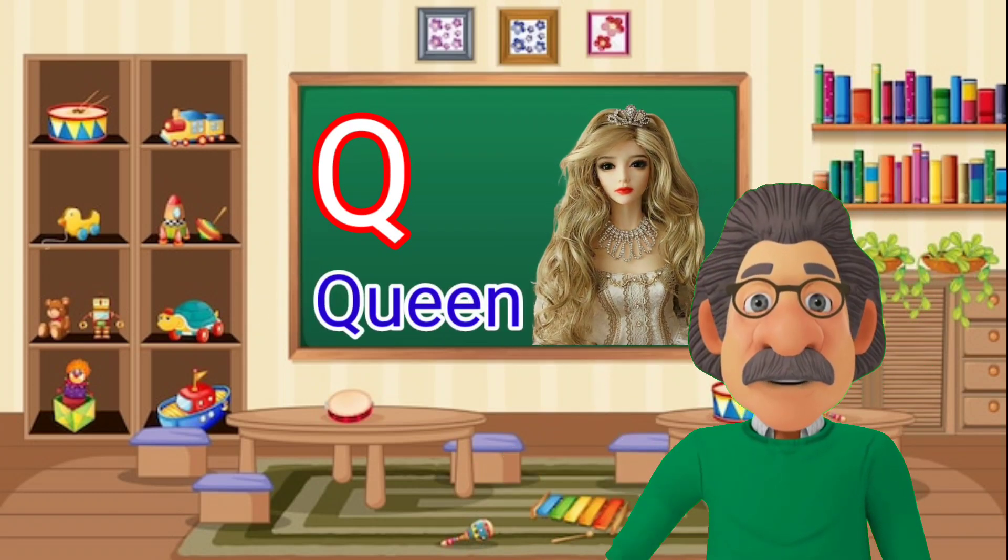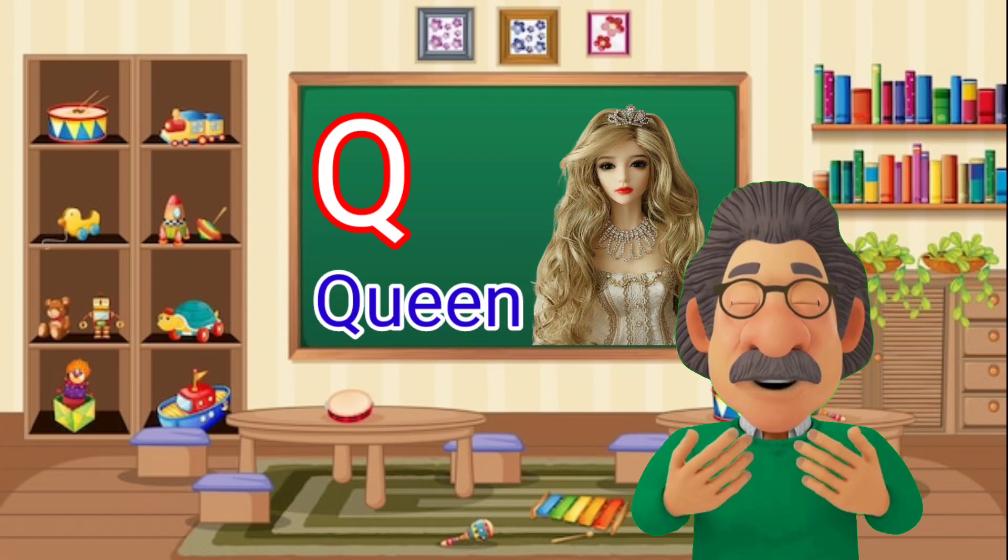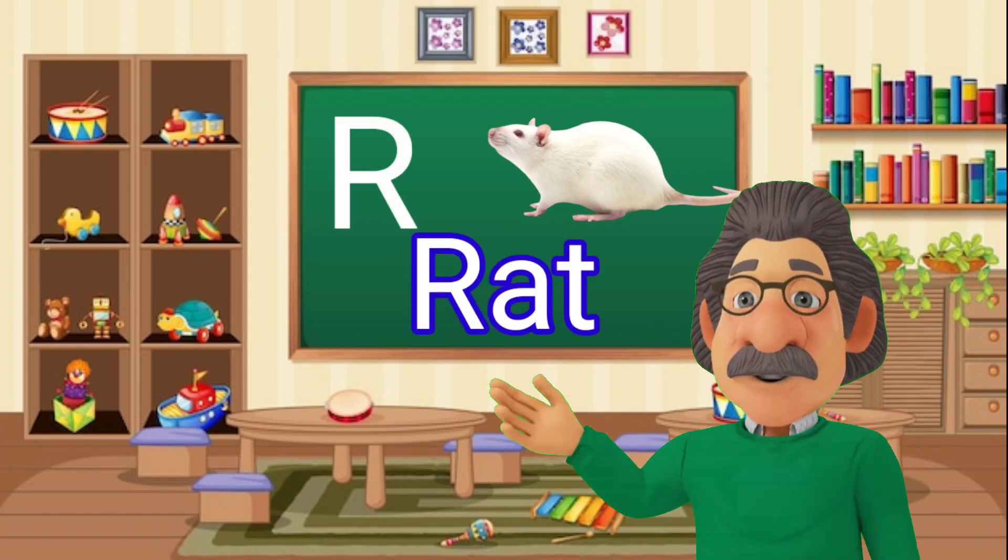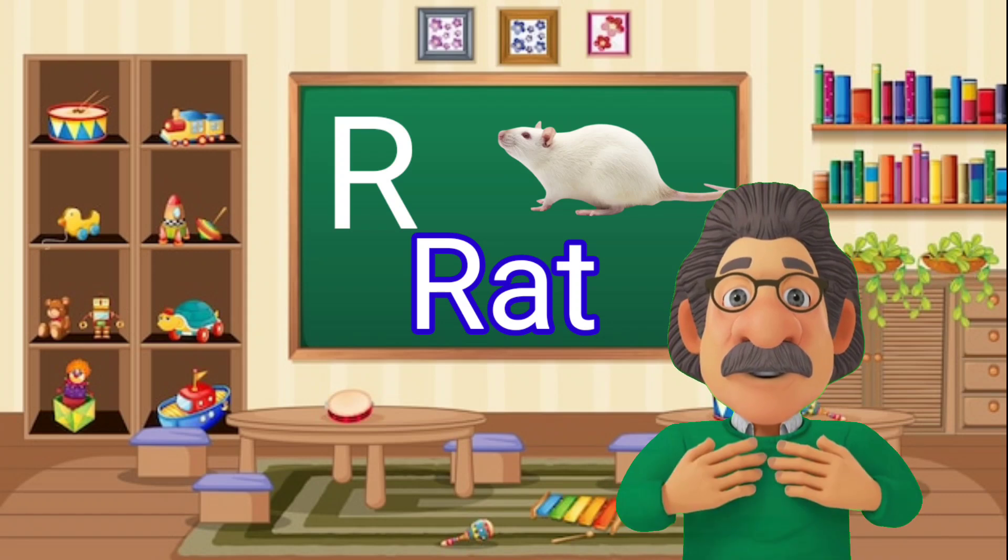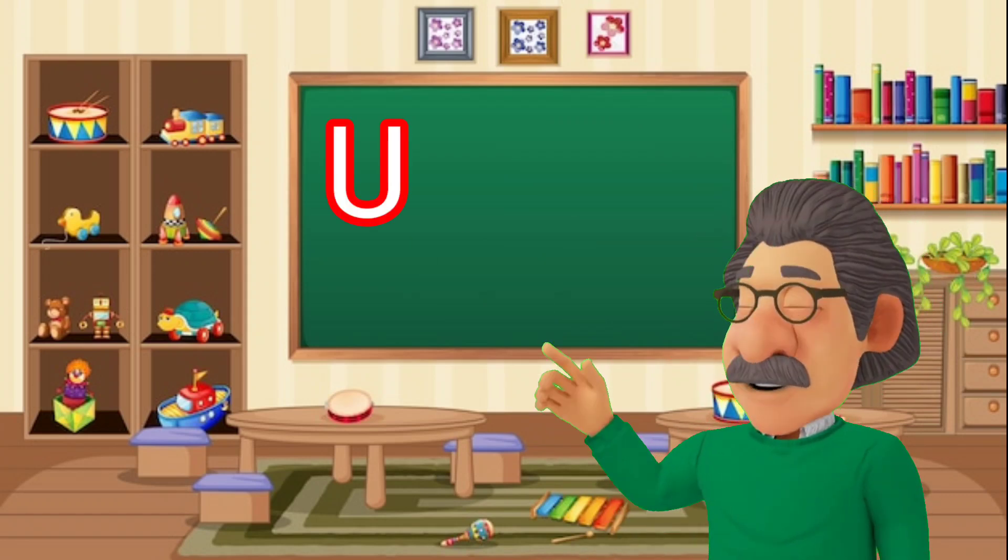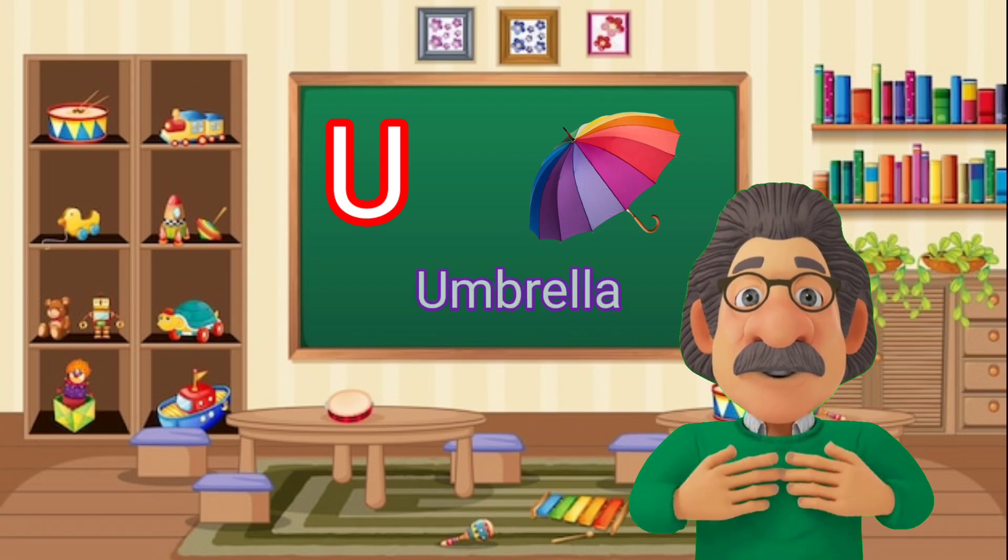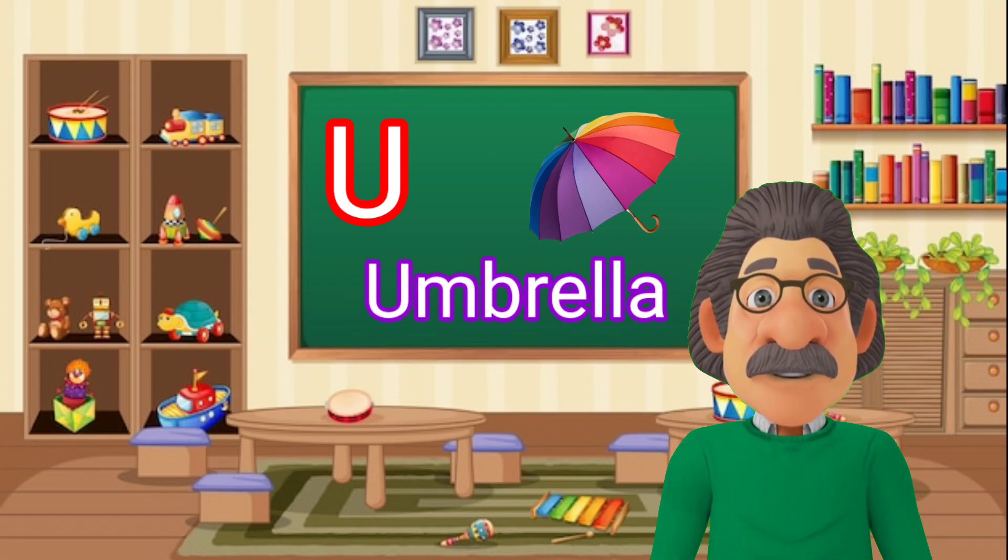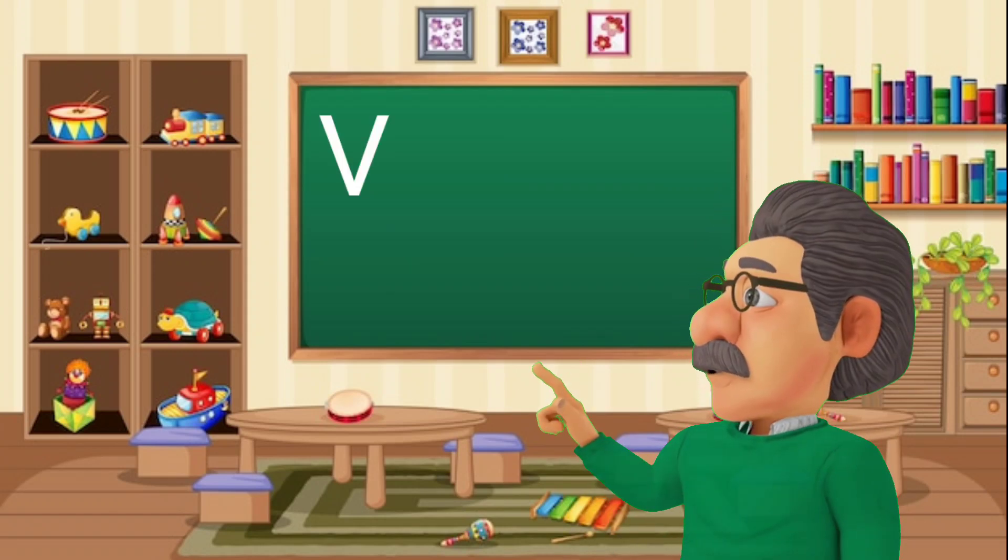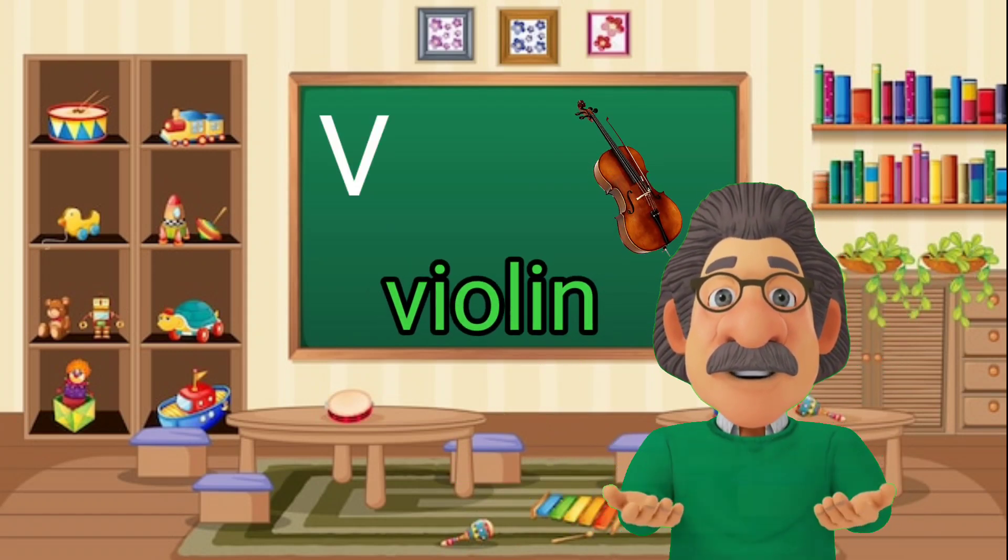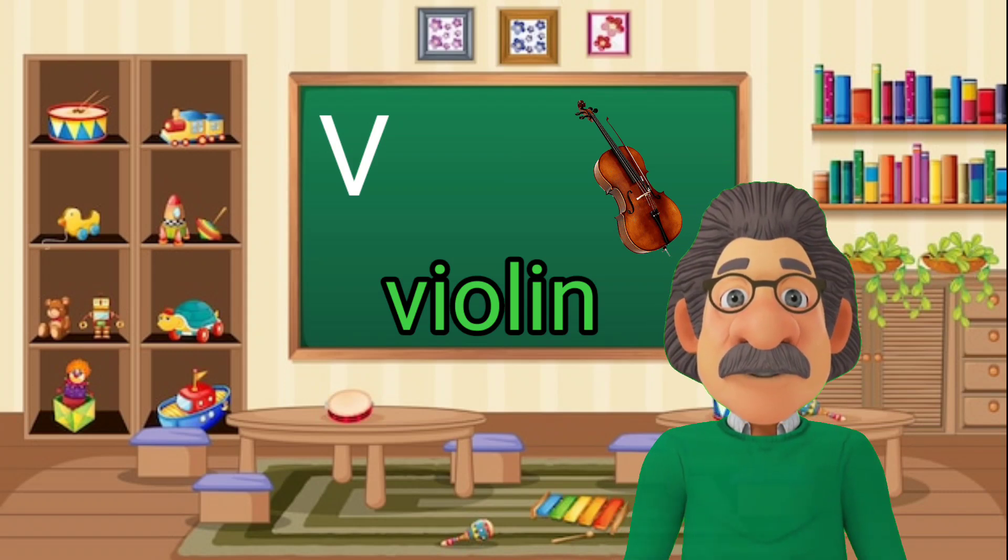Q-U-E-E-N, queen. R for rat, R-A-T, rat. U for umbrella, U-M-B-R-E-L-L-A, umbrella. V for violin, V-I-O-L-I-N.